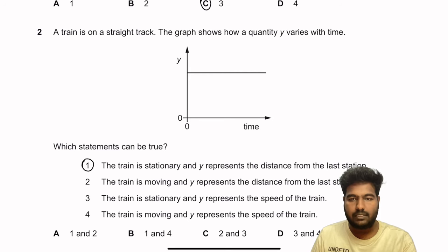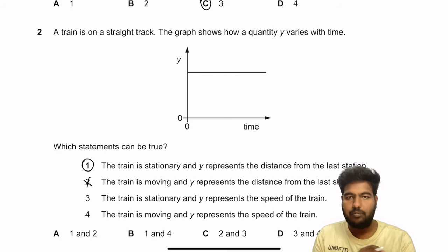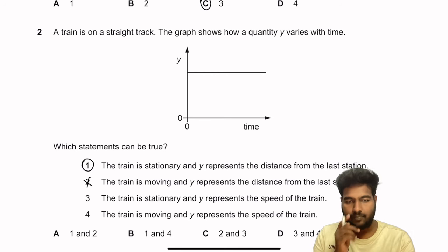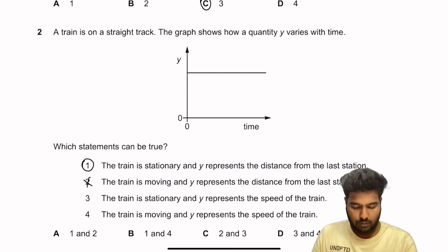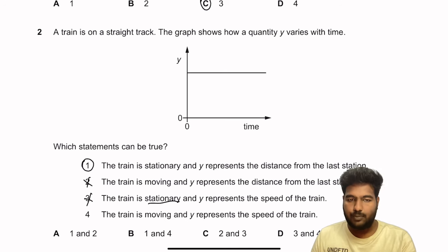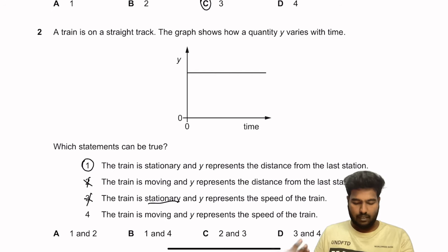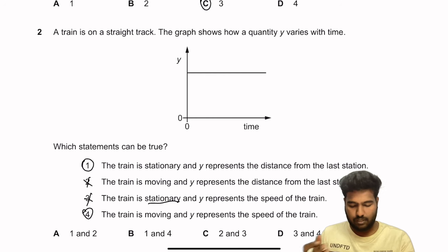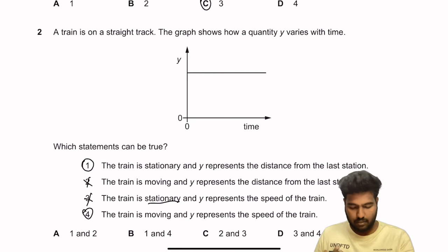Option B: the train is moving and Y represents distance from the last station — not true, because if the train is moving, the graph cannot be a horizontal straight line. Option C: the train is stationary and Y represents speed — also not true, because stationary means speed is zero, not constant. Option D: the train is moving and Y represents speed — this can be true if there is no acceleration or deceleration. So the answer is options one and four.